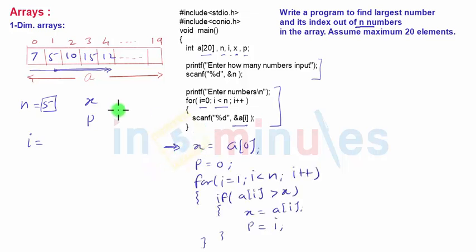First we store the zeroth number, a[0]=7, in x. Then we store p=0. In the next step, the for loop starts with i=1. In the first step, it checks: is a[1] greater than x? a[1] is not greater than x, so the if doesn't execute.